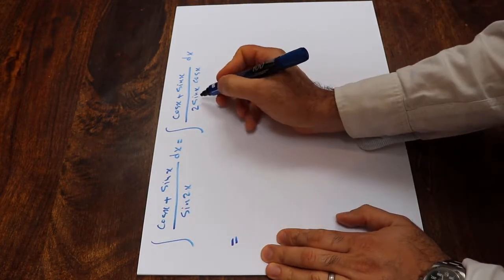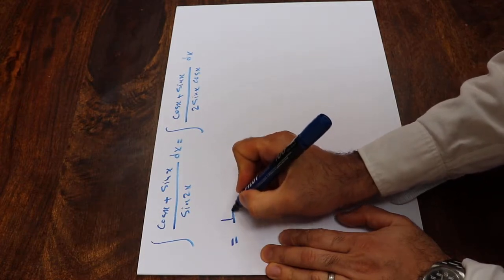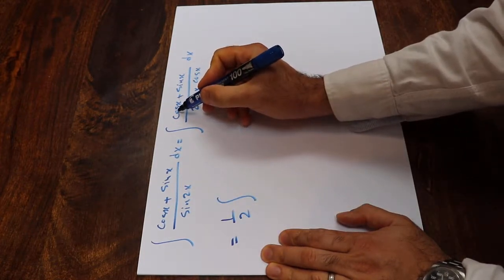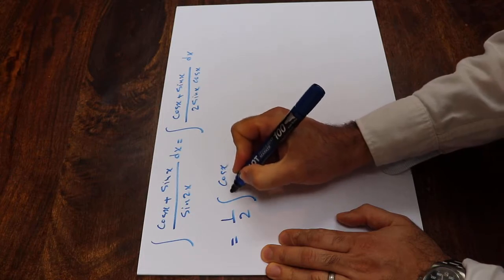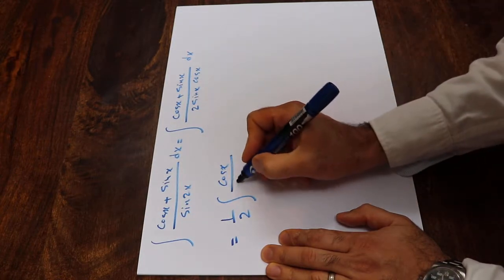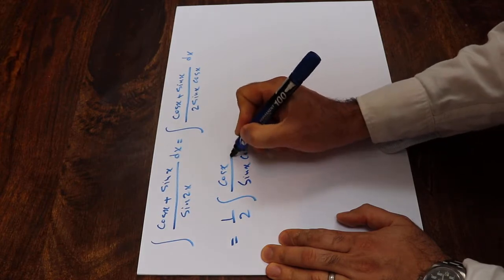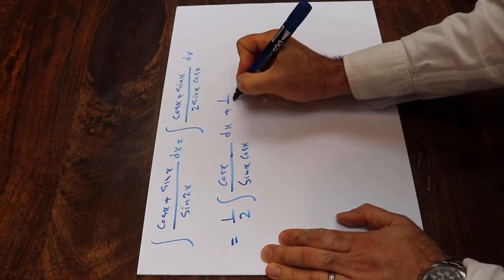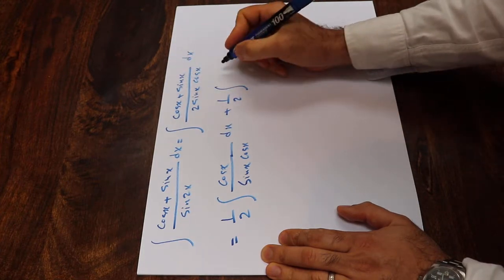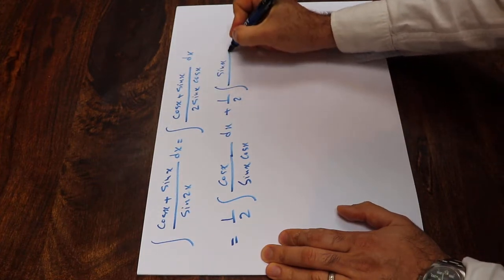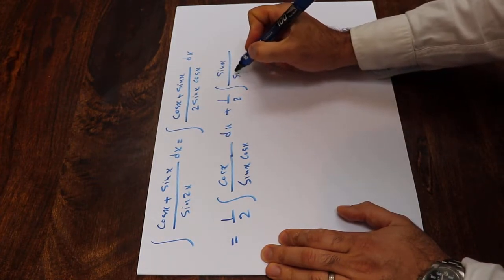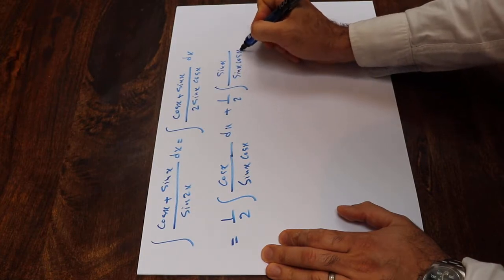Here you can rewrite this integral as 1 divided by 2 integral of cosine x divided by sine x cosine x dx plus 1 divided by 2 integral of sine x divided by sine x cosine x dx.